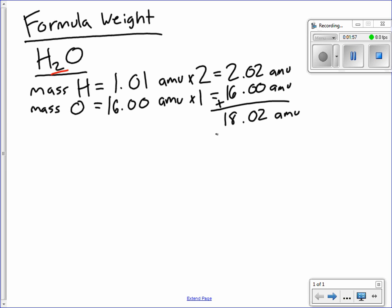So this number right here, that is the formula weight of H2O. That's the mass of one H2O molecule. 18.02 AMU. So that's all you've got to do. Fairly simple. Just add up the masses of each atom that's involved in this formula. So let's do one more. We'll do CO2. Keep it fairly simple.